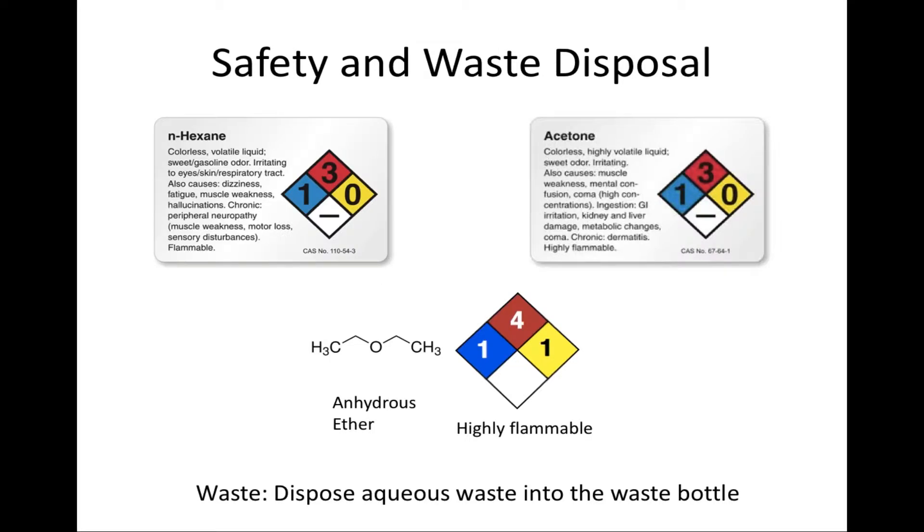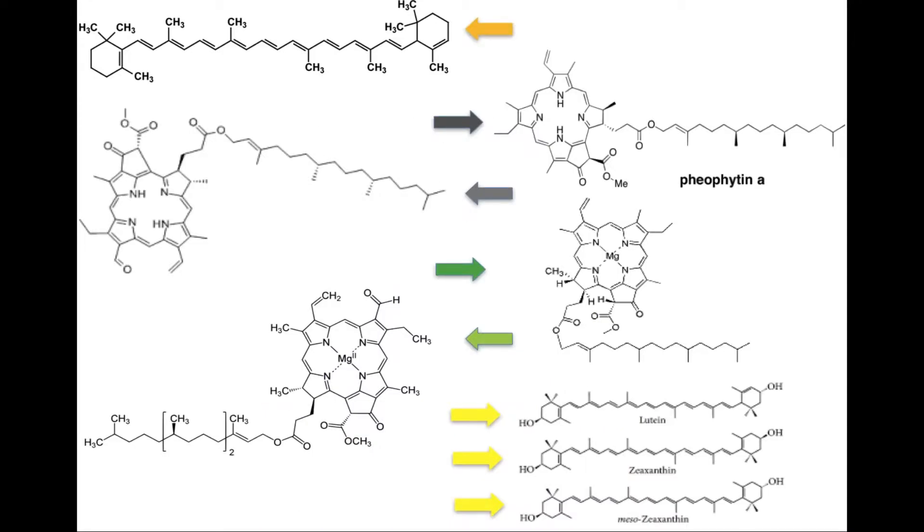All solvents used in this experiment are flammable. Pigments in the spinach leaf can be categorized into two groups: green pigments, such as chlorophylls, and yellow pigments, such as carotenes and xanthophylls. The following are the structures of the spinach pigments.